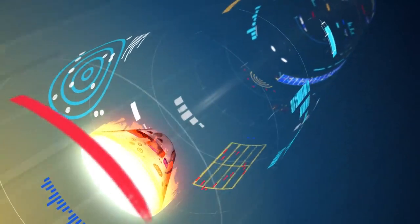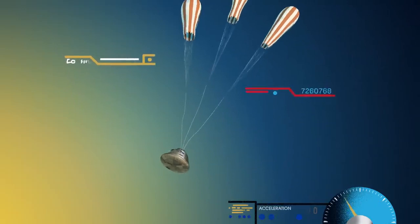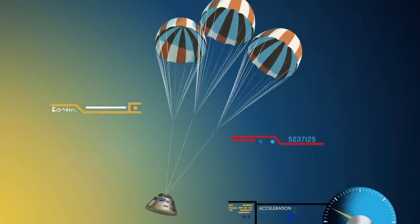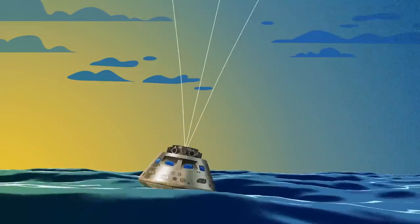With Orion now at just 300 miles per hour, a series of parachutes uniquely tested and produced for this moment deploy, decelerating the craft to just 20 miles per hour for splashdown.